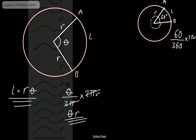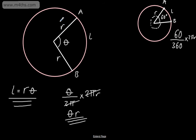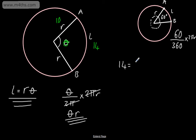Let's put some numbers on here and see how easy this is. Say the radius is 10 centimetres and the arc length is 14 centimetres, and we want to find the value of theta. Plugging into the formula: 14 equals 10 times theta, so theta equals 14 over 10, which is 7 over 5. So 1.4 radians is the size of the angle.